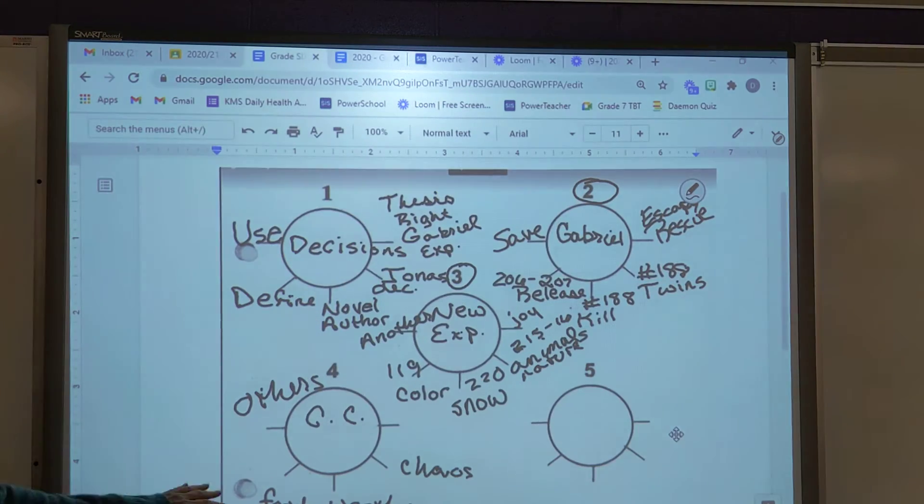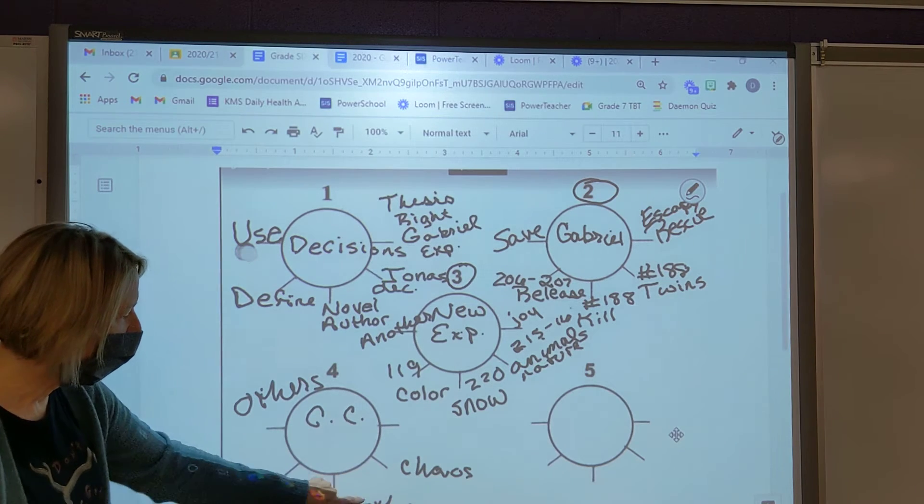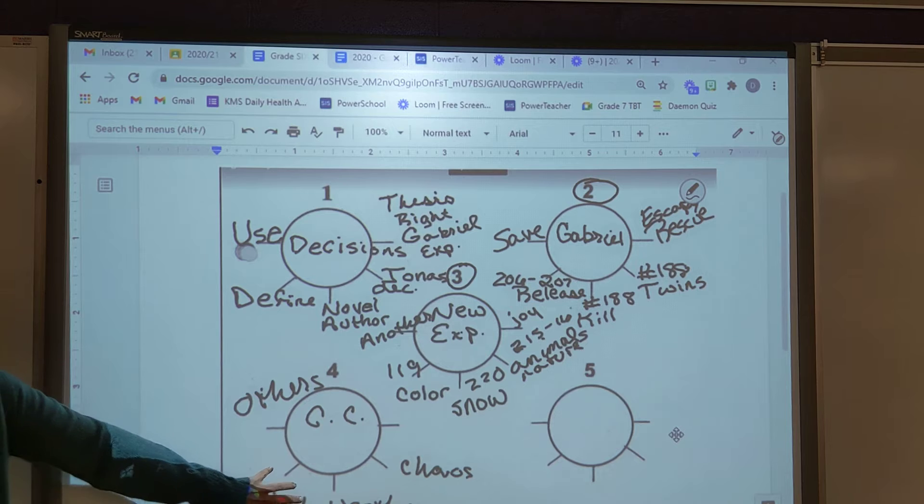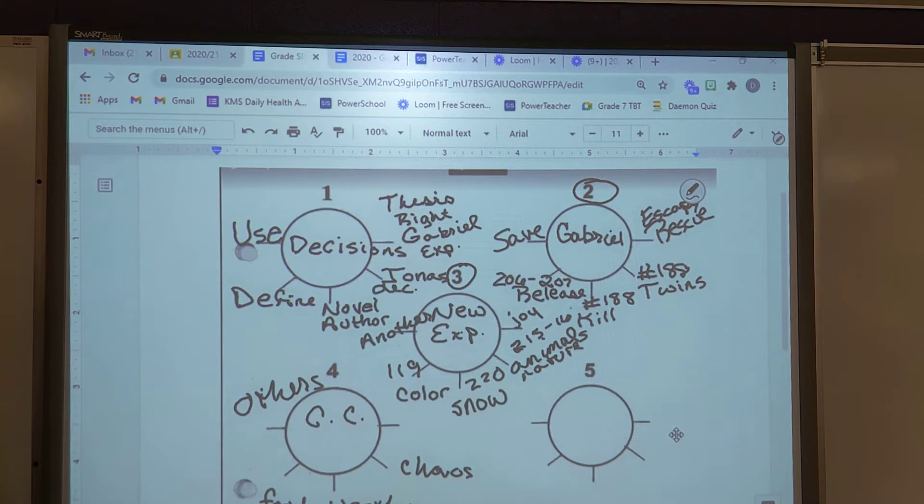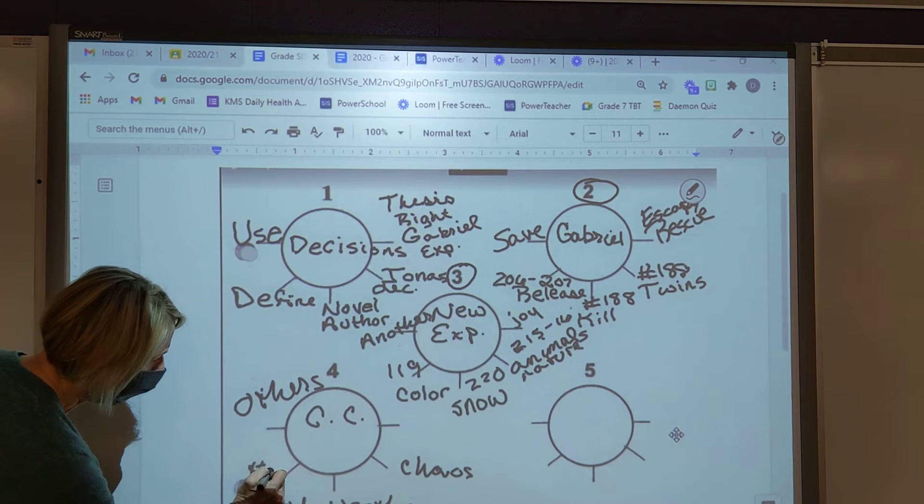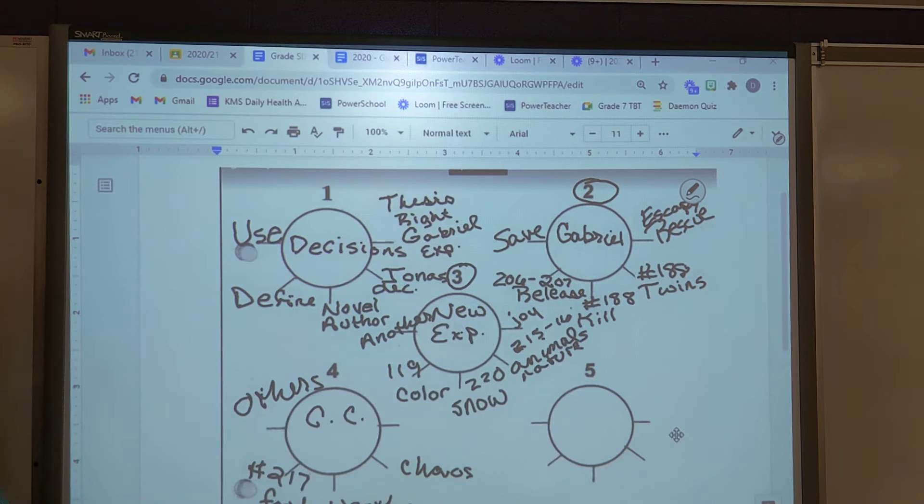So what I need now are the page numbers where these things are found. So where do we learn about hunger? And what's he talking about there? Is that when Gabe, when they are hungry in their escape? Yeah okay, is that the one we agreed on? We talked about this I think a little bit yesterday. All right so put page 217 there.